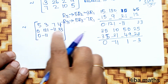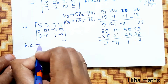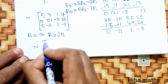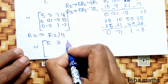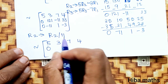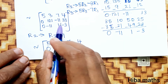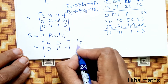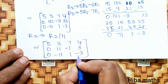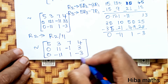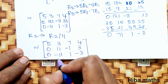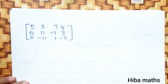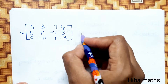Now the second row is divisible by 11. R2 changes: R2 divided by 11, giving 0, 11, minus 1, 3. Then we observe that R2 plus R3 equals zero for the third row, making the third row all zeros.